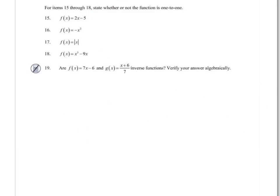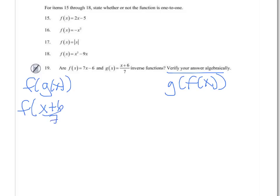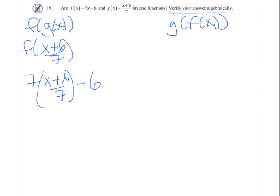Now for 19, verify that they are inverses. We have to do f of g of x and g of f of x. So f of g is 7 times that fraction. So these 7s divide to 1, so I get x plus 6 minus 6, and we get x, which is what we needed.